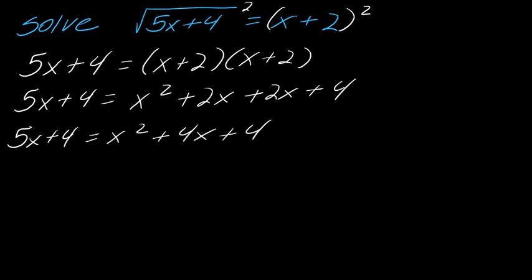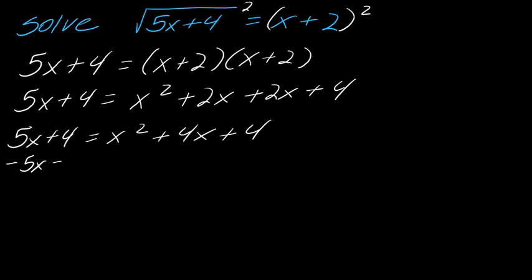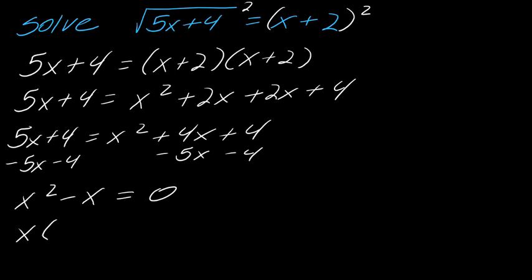Now I can finish this. Notice the x squared term tells me I'm going to have to factor or use another quadratic method. I need to bring everything over to one side, so subtracting gives x squared minus x equals 0. Factoring: x times x minus 1 equals 0. I'm keeping all my x's — not dividing out. So my solutions are x equals 0 or x equals 1.